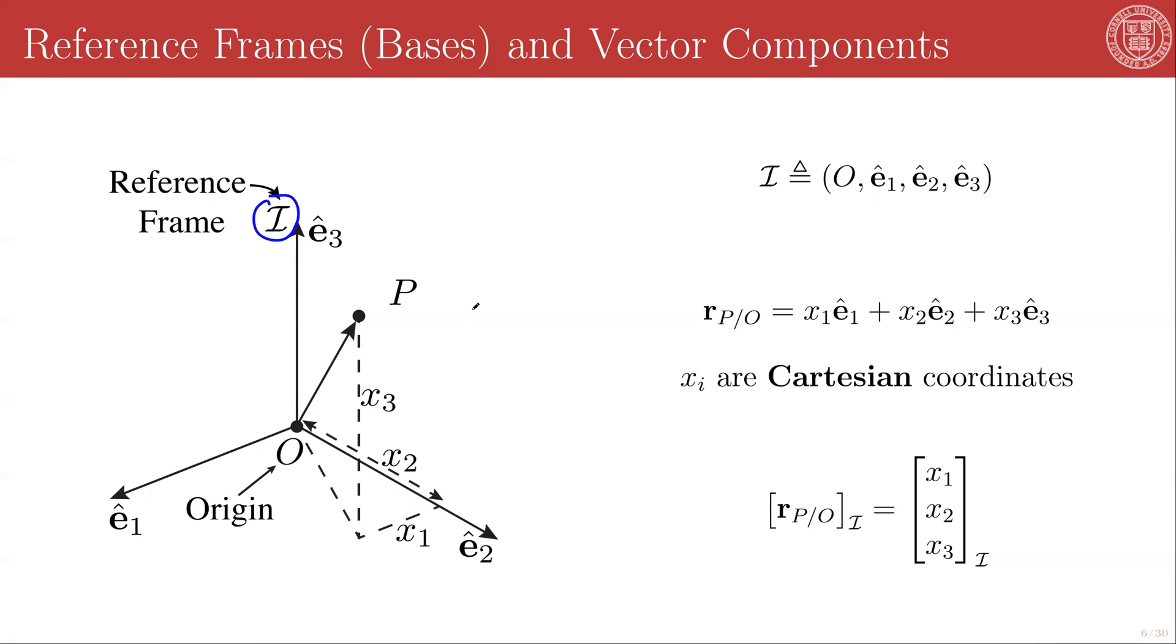And while strictly speaking, a coordinate origin is not required to define a vector space, it is really convenient to define a point that is fixed within this space. Because the reference frame is our way of measuring space, is a way of defining the directions of space. And so we will tack on a coordinate origin for use later.